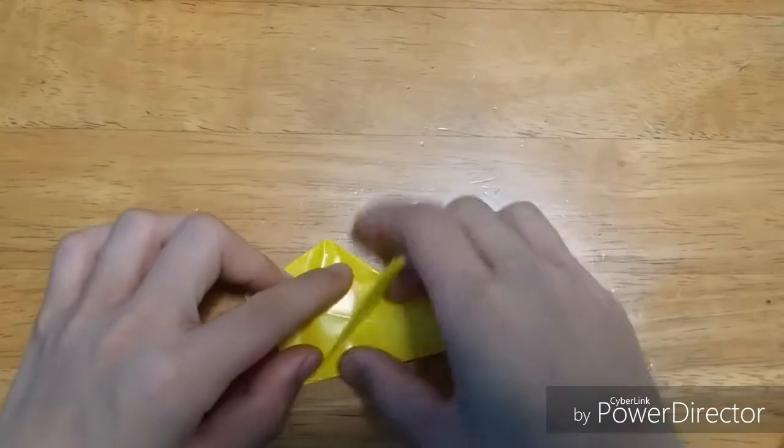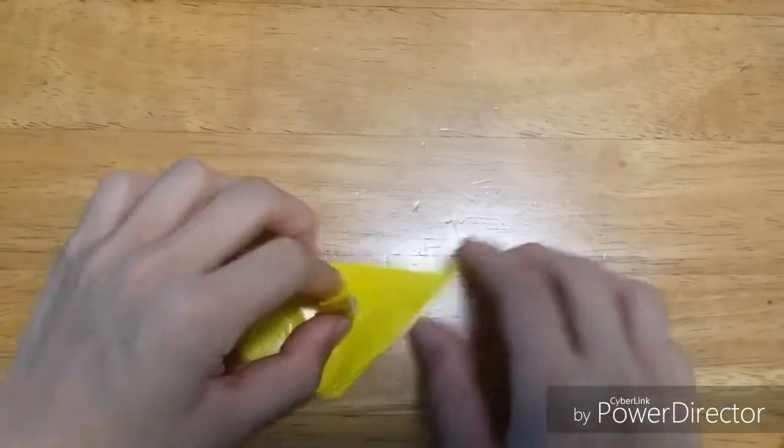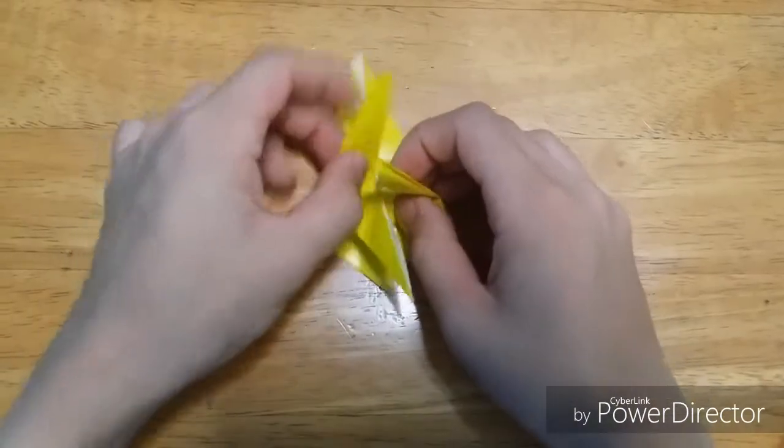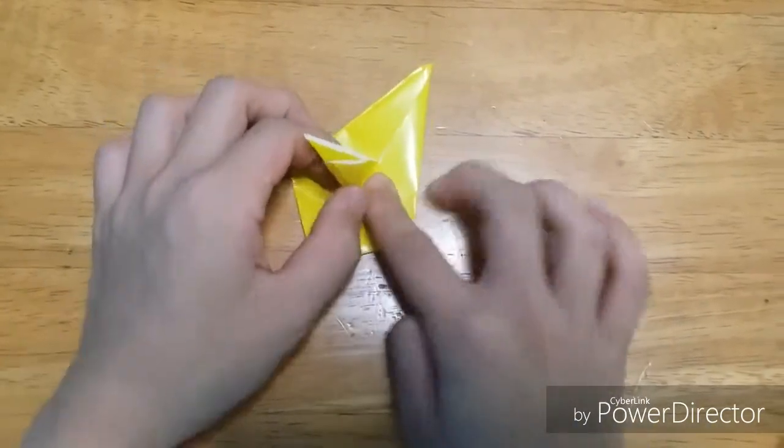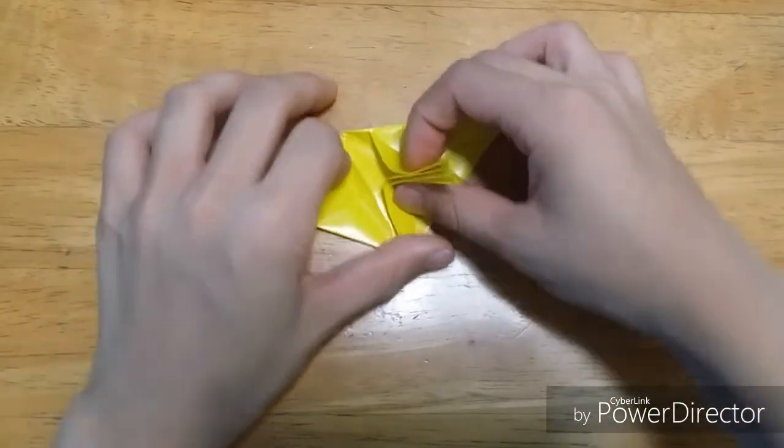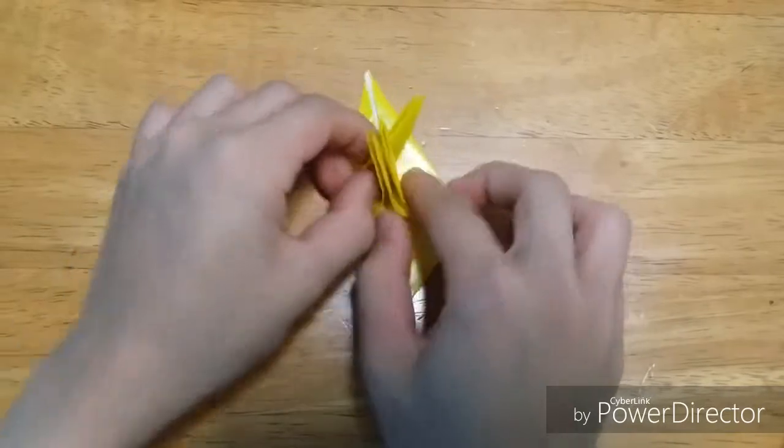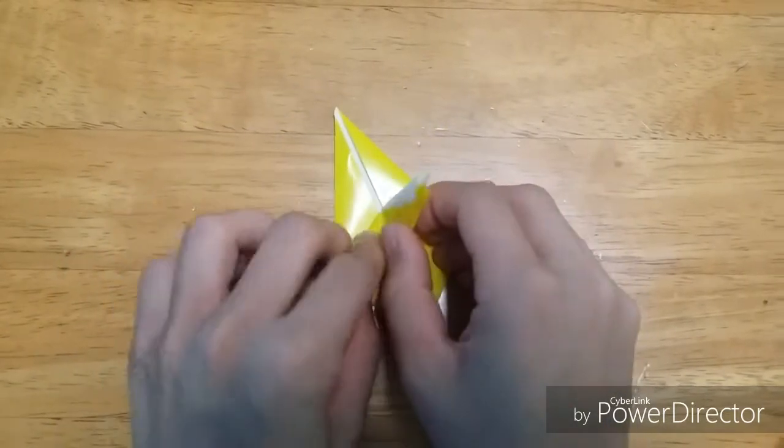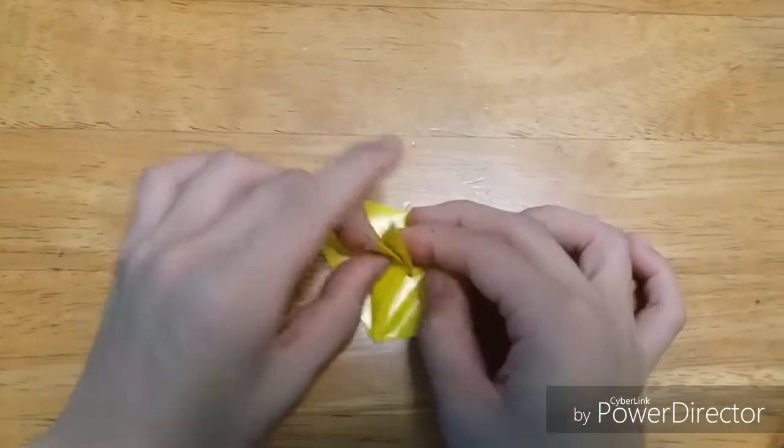Then change it together, create a rabbit's ear fold. Take these two flaps and fold it this way so it aligns together with this like that. Fold it this way like that.